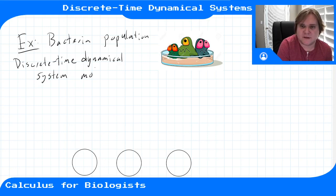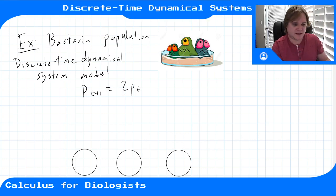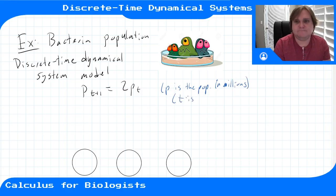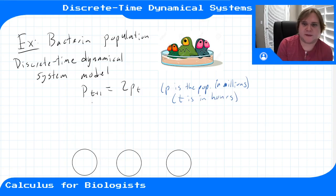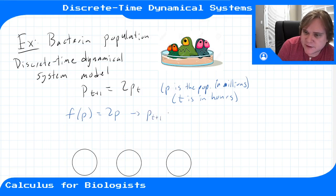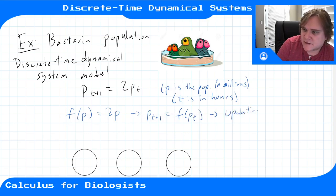This model looks like p(t+1) = f(p(t)), where p is the population of bacteria in the petri dish in millions of cells, and t is measured in hours. The function f on the right-hand side — p(t+1) = f(p(t)) — is called the updating function for our system.